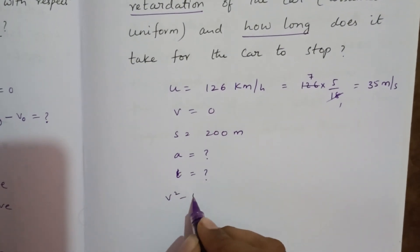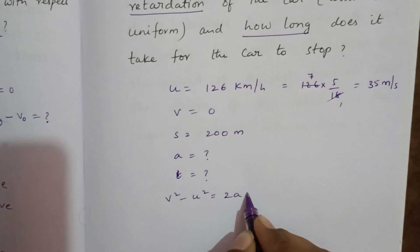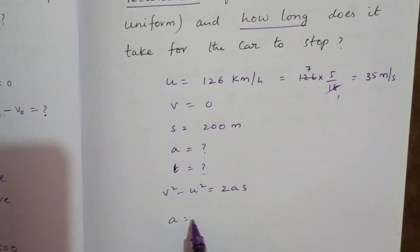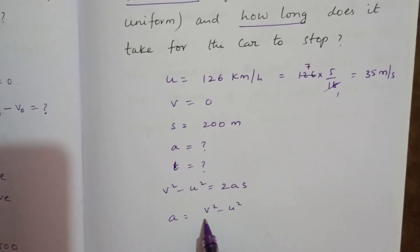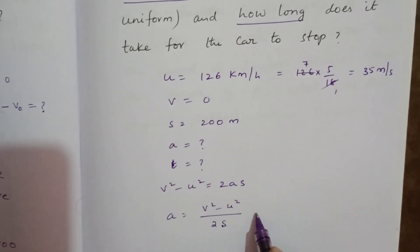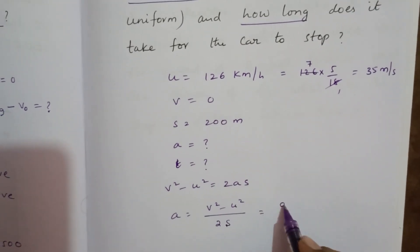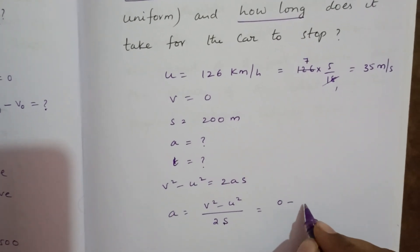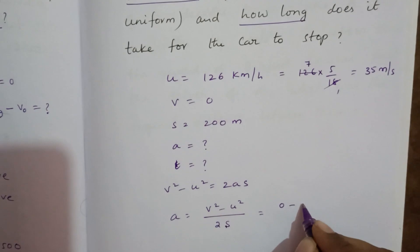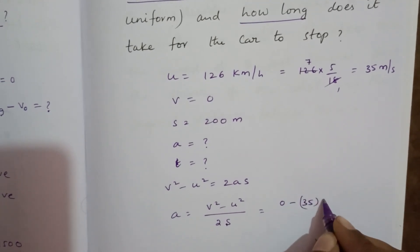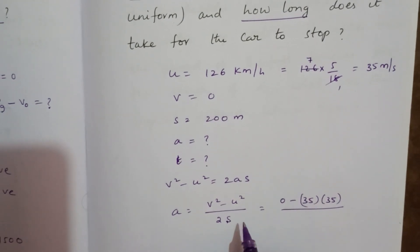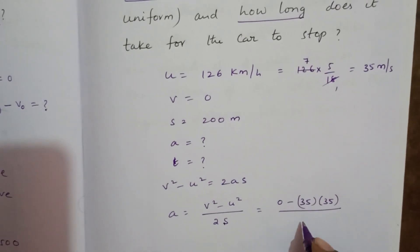v square minus u square equal to 2as. Now a equal to v square minus u square by 2s. v square minus u square, 0 minus 35 square, 35 into 35, by 2 into s, 2 into 200, 400.